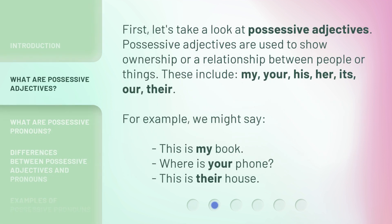First, let's take a look at possessive adjectives. Possessive adjectives are used to show ownership or a relationship between people or things. These include: my, your, his, her, its, our, their. For example, we might say: this is my book. Where is your phone? This is their house.